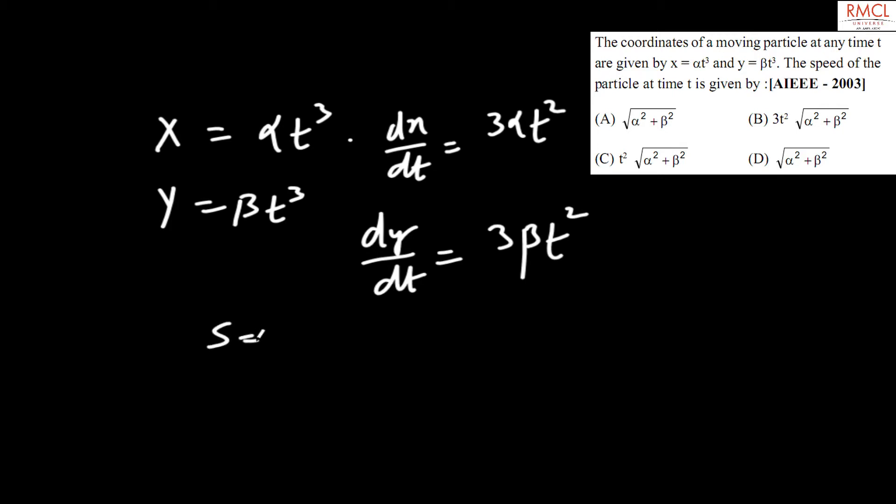The speed of the particle at time t is given by... So what will the speed of the particle be? Speed of particle would be root over vx square plus vy square, and what is dx by dt? That's vx. And what is dy by dt? That's vy. Putting this value in this equation...